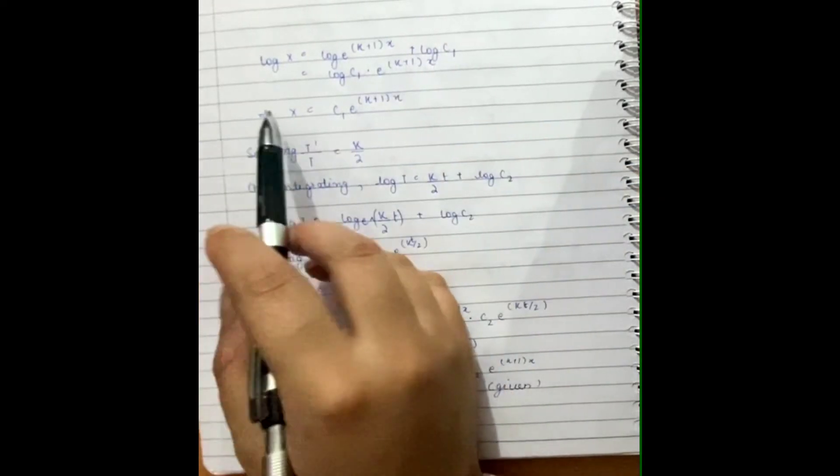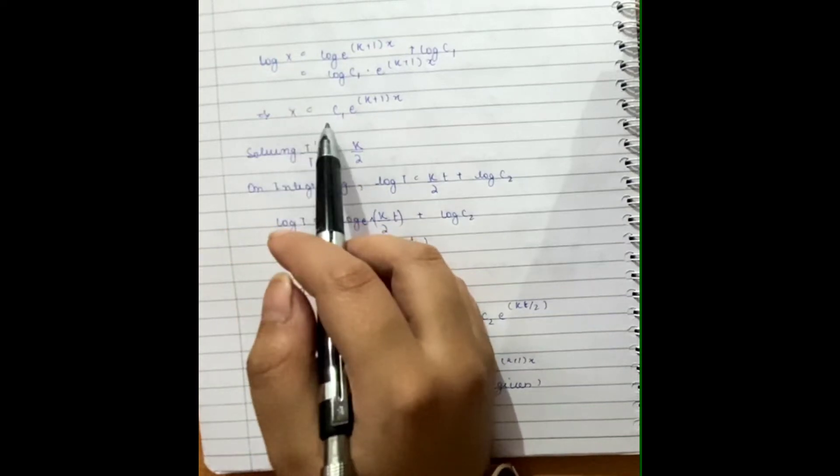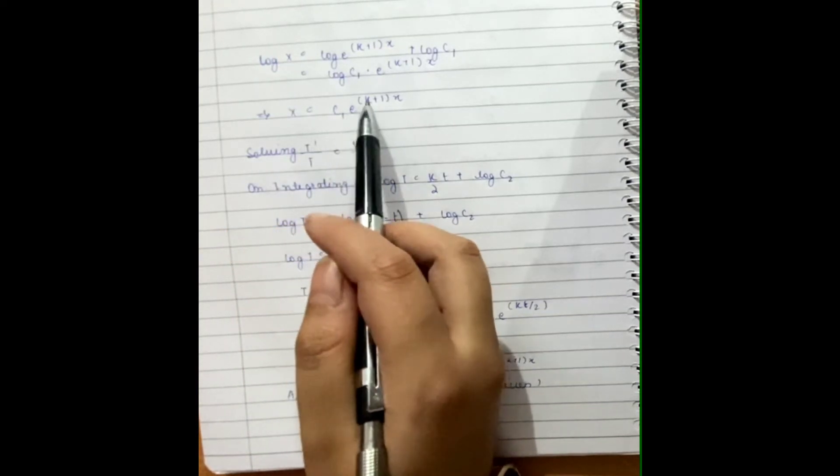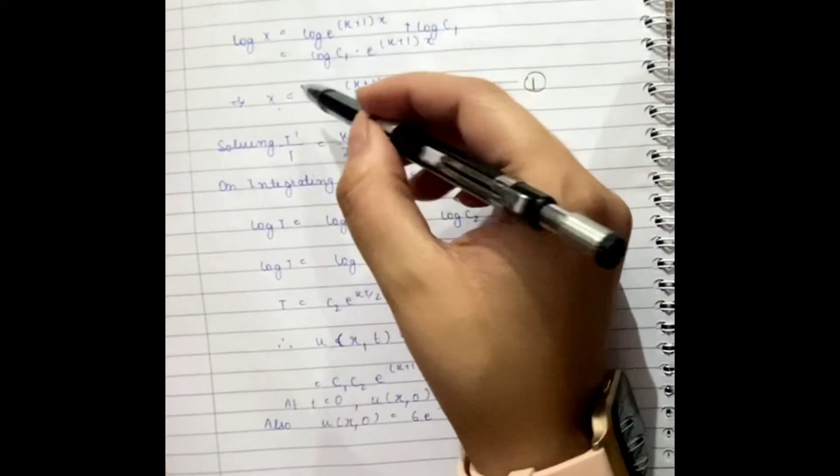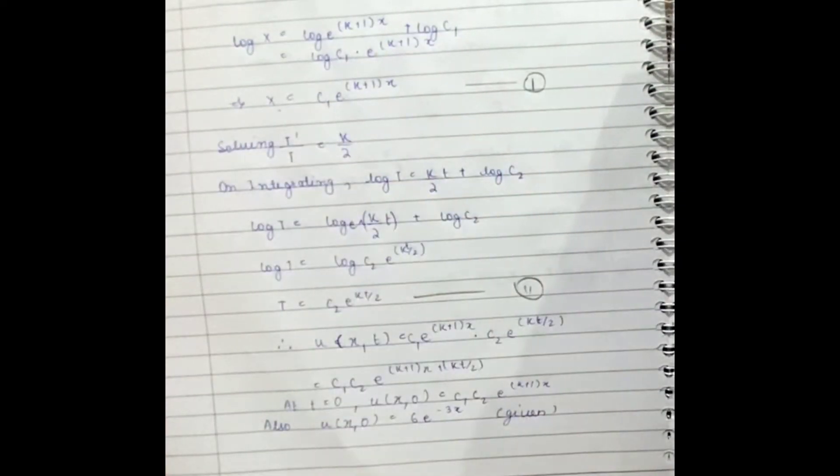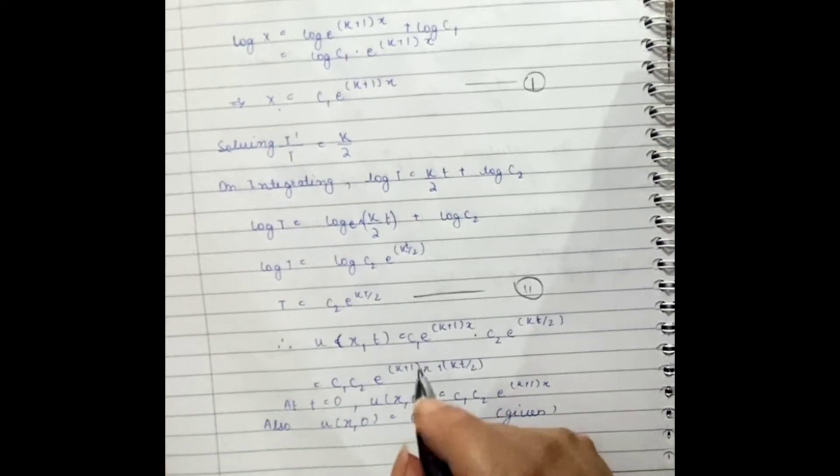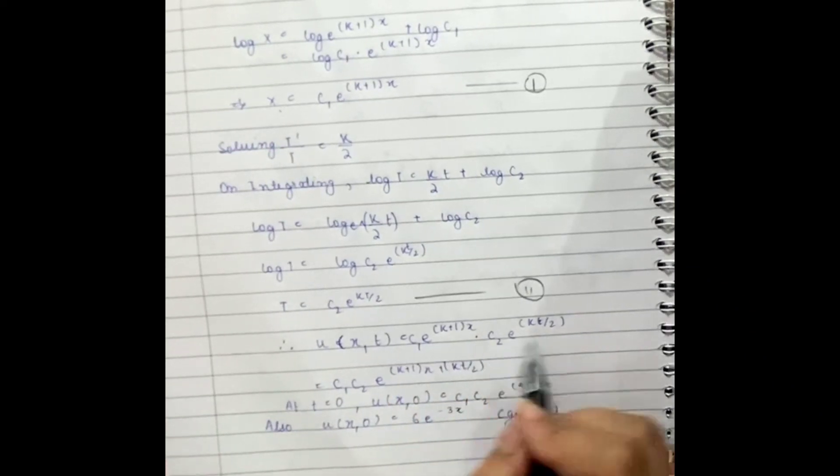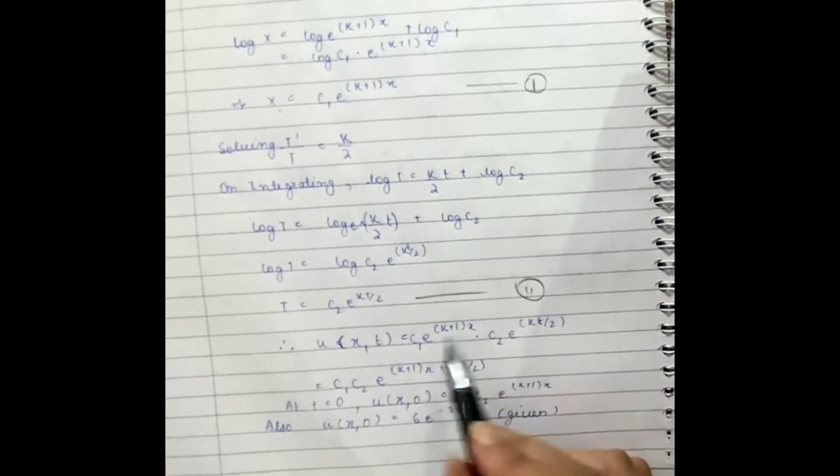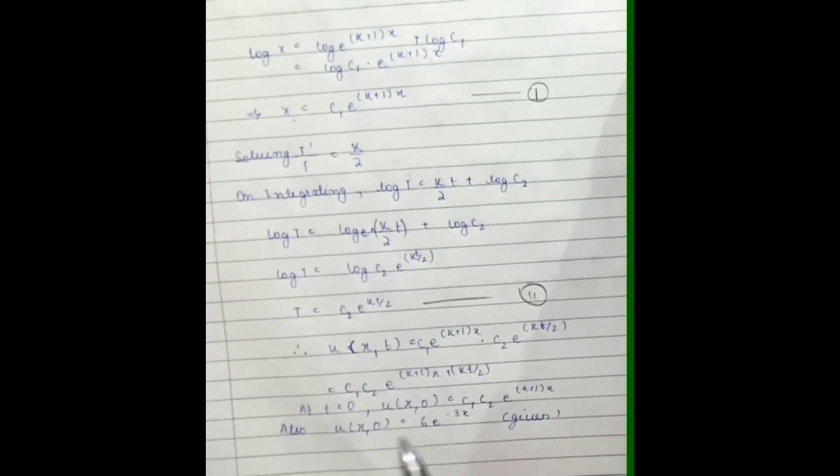Similarly, we will solve for T and we will get the values of X and T separately. Now we will put these values in the function u(x,t), and then we will get this solution. Taking these together, we were also given a condition that u(x,0) = 6e^(-3x).